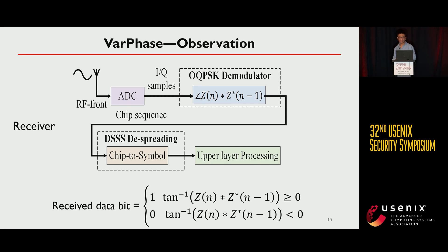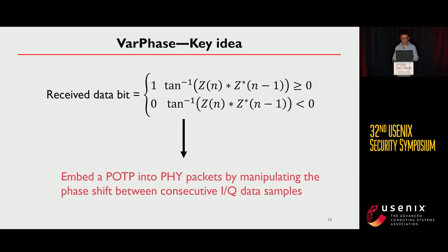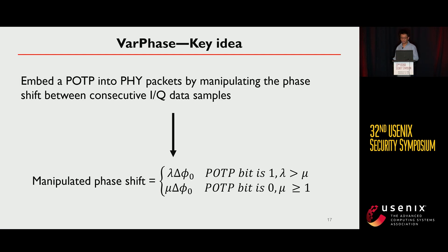Our third scheme is called WorkPhase. At the receiver side, Zigbee devices use an OQPSK demodulator to convert received IQ samples to chip sequences, using the phase shift between two adjacent IQ samples. If the phase shift is less than zero, it outputs chip zero; otherwise, chip one. We can therefore embed the POTP by manipulating the phase shift between two adjacent IQ samples: if the POTP bit is zero, the phase shift is set to parameter mu; if the POTP bit is one, the phase shift is set to parameter lambda.